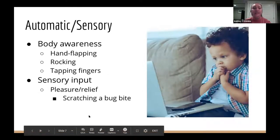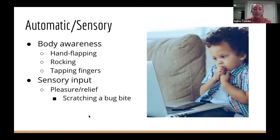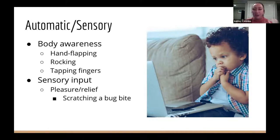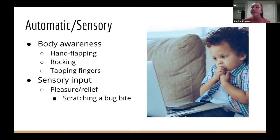Our third function is automatic and sensory, which relates to body awareness. Some kids — and adults too — tap their fingers or tap their foot when thinking. Things like rocking or hand flapping help people feel more aware of their body. It could also be for sensory input, to feel relief or to feel good. For example, scratching a bug bite is done to get relief from that sensory experience.